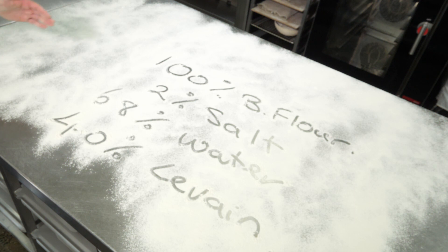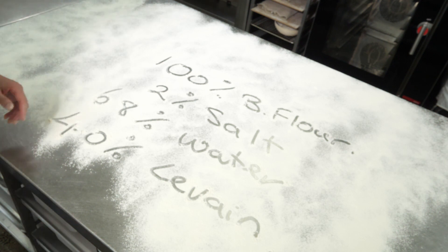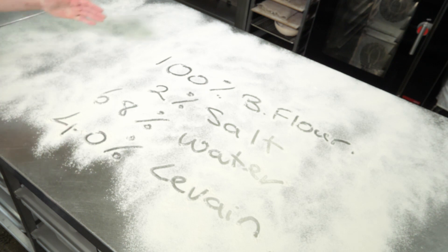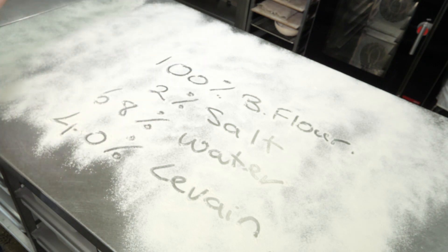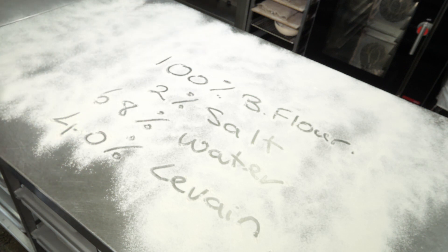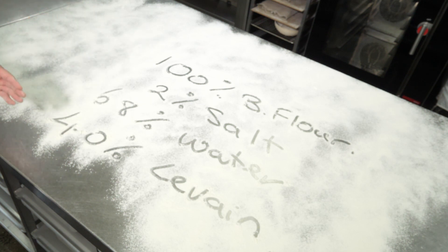We do that because our production changes every single day. Some days I'll need 100 loaves, some days I'll need 20 loaves. But if we work on this ratio, then it doesn't matter if I'm making 100 loaves or 2 loaves — it's always the same. So flour is always 100%, and salt, water, and levain can vary depending on what recipe we're making.